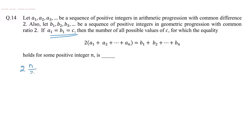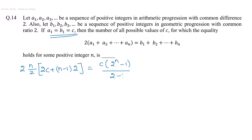So we apply the sum formula. Two times the sum of n terms of the AP is: 2 × (n/2) × [2c + (n−1) × 2], where c is the first term and the common difference is 2. This equals the sum of n terms of the GP: c × (2^n − 1) / (2 − 1).